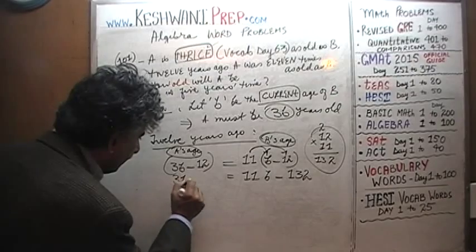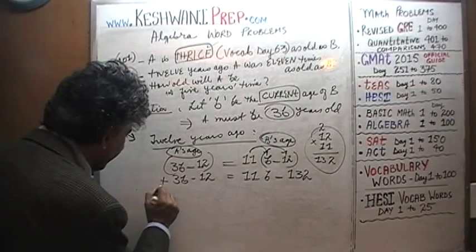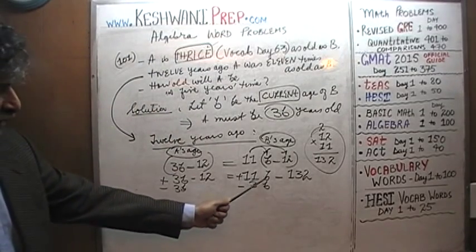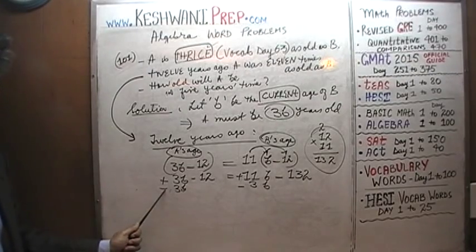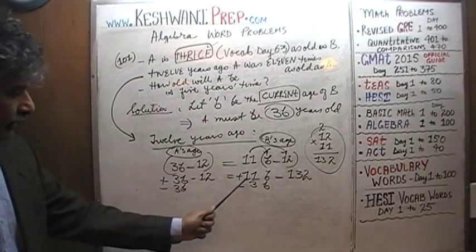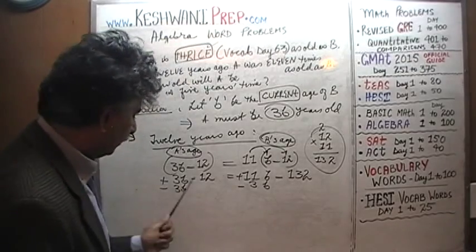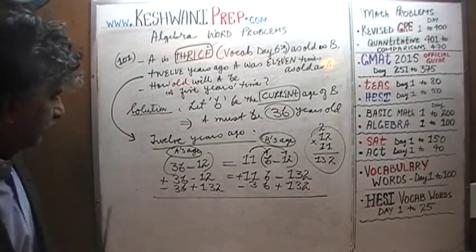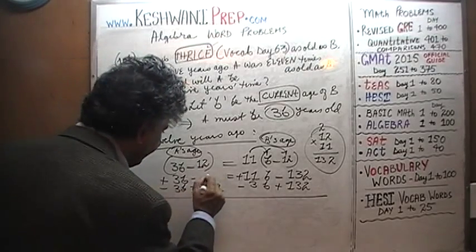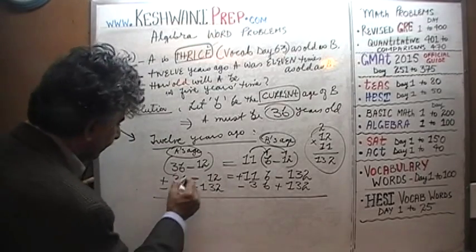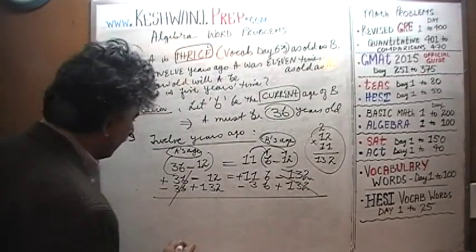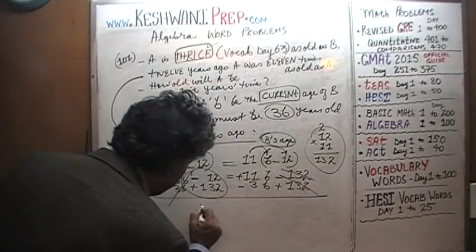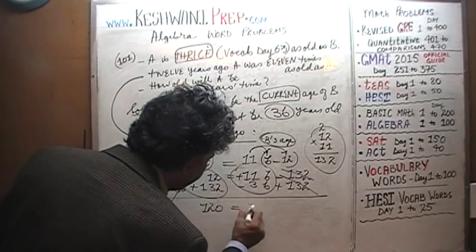So we have 11b minus 132 = 3b minus 12. Subtract 3b from both sides — I prefer to keep the coefficient of the unknown positive, so I bring 3b to the left rather than 11b to the right. That gives 8b minus 132 = minus 12. Now bring 132 to the right: 8b = 132 minus 12 = 120.